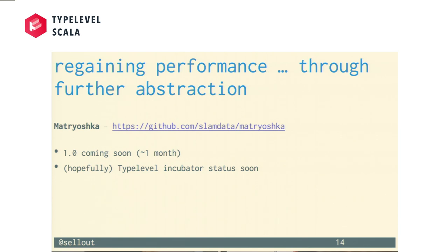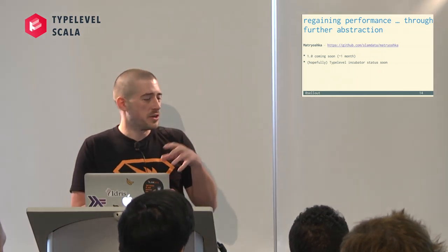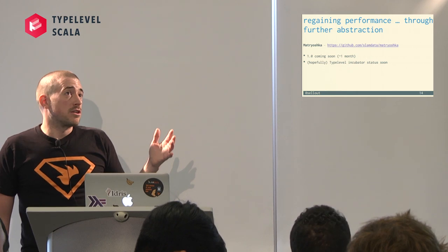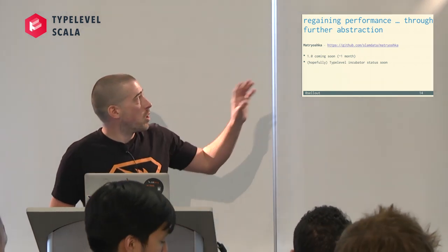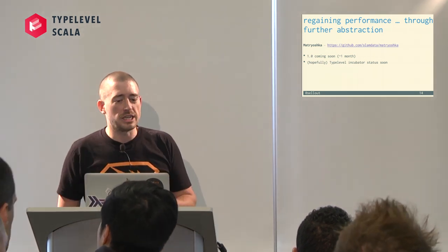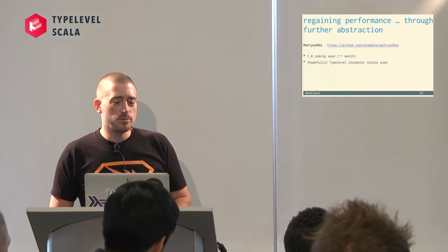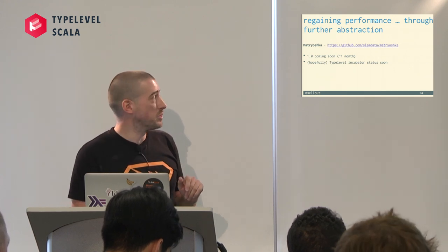There's a new library that I've spent a lot of time on, along with others at SlamData. It's called Matryoshka — Russian nesting dolls — the idea being controlled or finite recursion. It's still in heavy development, but it works and we've been using it extensively. We should have 1.0 out soon. We'd like it to be a type-level incubator project. The next part of this talk is how to get back the performance we've lost by writing these nicely decomposed things.